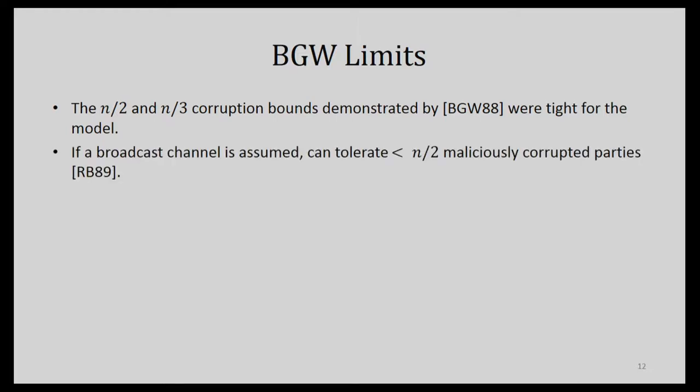Another early result: if there is a broadcast channel, you can have a protocol secure for anything fewer than half of your parties being corrupted. A broadcast channel means one party can send a message to everybody and everyone can be confident the same message came to every other party — which is actually very hard to guarantee by itself. You can do it with protocols for what's called Byzantine Agreement.